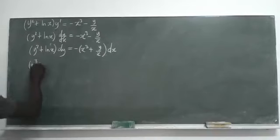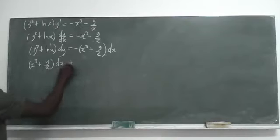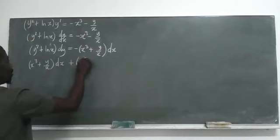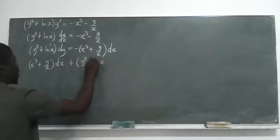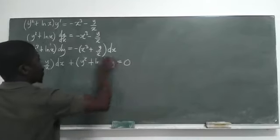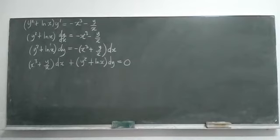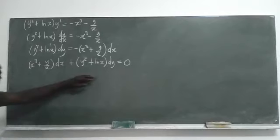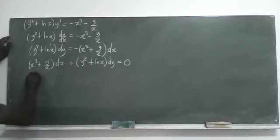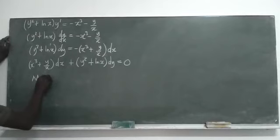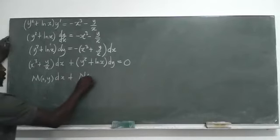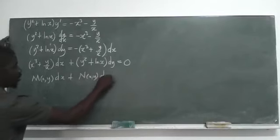We end up with x cubed plus y over x in brackets times dx, plus y squared plus ln(x) times dy equal to zero. This differential equation can be identified as an ODE of the form M dx plus N dy equal to zero, where M and N are functions of x and y.